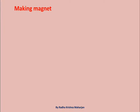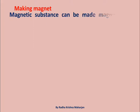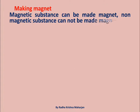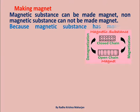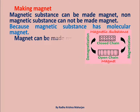Making Magnet: A magnetic substance can be made into a magnet, but a non-magnetic substance cannot be made into a magnet. This is because a magnetic substance has molecular magnets.